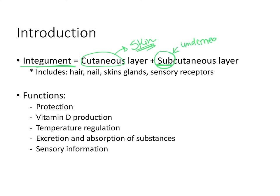The subcutaneous layer is what you also know as subcute. The integument has these two main layers and includes everything we find in them, such as hair, nails, skin glands, and also sensory receptors.